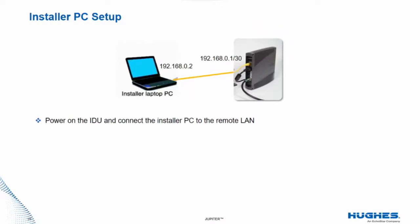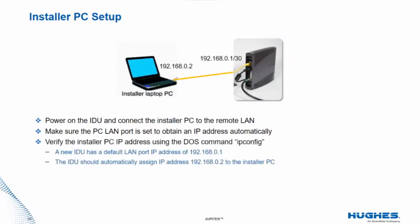Power on the IDU and connect the installer PC to the terminal LAN1 port. Make sure the PC LAN port is set to obtain an IP address automatically. Verify the installer PC IP address. A new IDU has a default LAN port IP address of 192.168.0.1. The IDU should automatically assign IP address 192.168.0.2 to the installer PC. Ping the IDU to verify the connection.